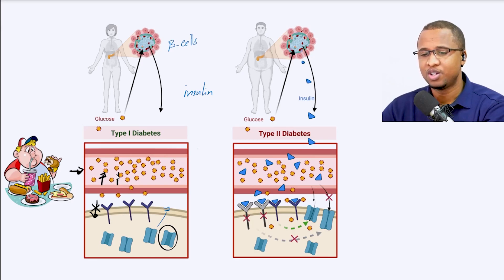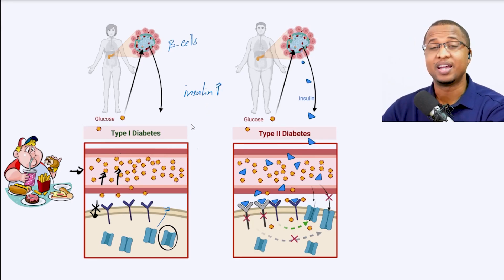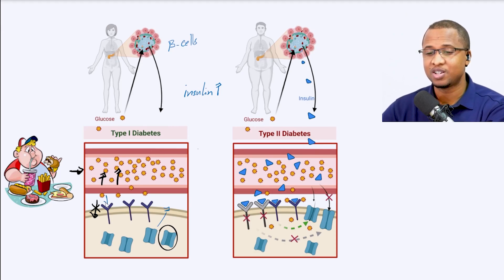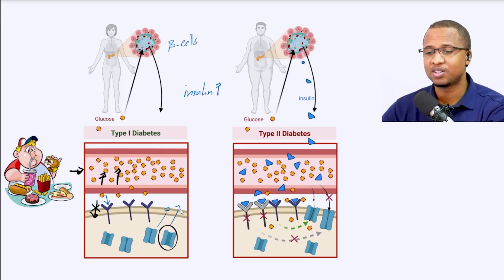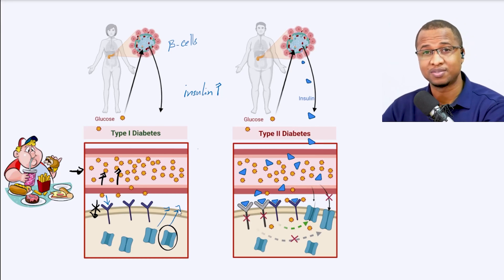The food comes, glucose goes up, and beta cells release insulin. And insulin will tell these cells to bring the transporters to the membrane to get glucose.